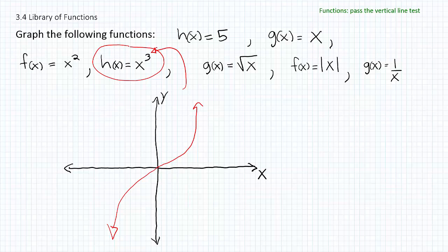We can go further to say any polynomial function with highest degree equal to an odd number kind of looks like this snake shape. Likewise, any polynomial function with highest degree equal to an even number kind of looks like the parabola. Something like h of x equals x to the third is going to have this snake-looking graph. The snake graph can be moved around and switched, but if you have a polynomial of degree 3, you're going to expect it to look something like this.